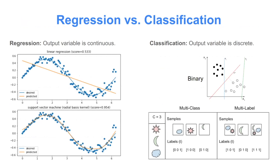Drilling down into supervised learning, there are two types: regression and classification. A regression is when the output variable is continuous. In this figure, a linear regression model tries to learn samples generated by adding random noise to a sine wave — it just draws a line and does its best to fit all the points. Similarly, a support vector machine draws a better line and gets a better score. Both are trying to predict the continuous y-axis position given the x-axis.